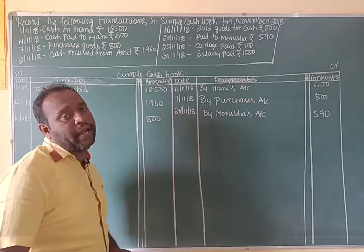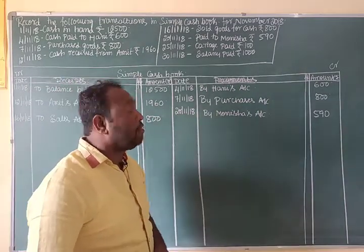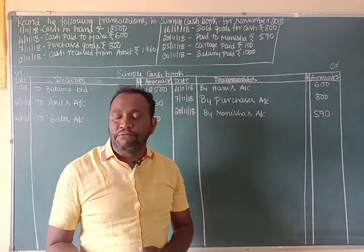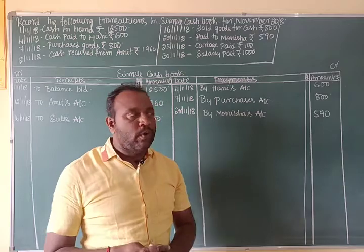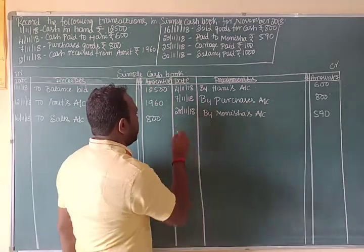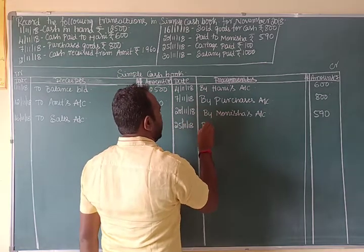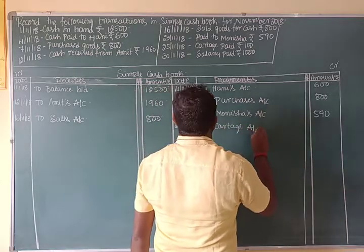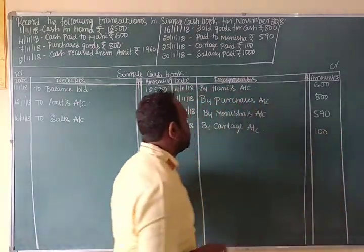Next, 25th November 2018: cottage pay — rent paid. The general entry is: Cottage Account debit, To Cash Account. Cottage means we are paying rent. Entry: 25th November 2018, By Cottage Account — Rs. 100.